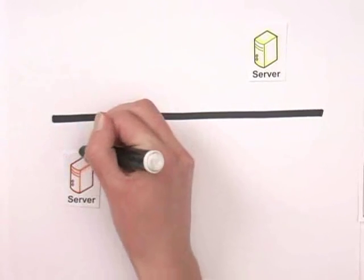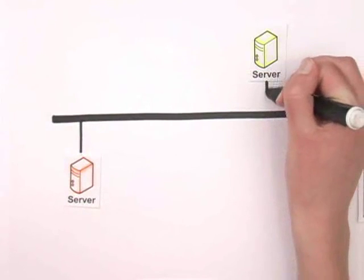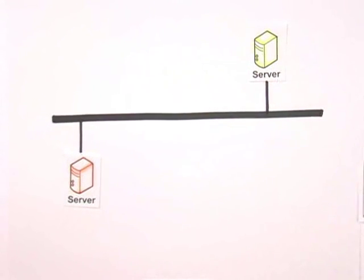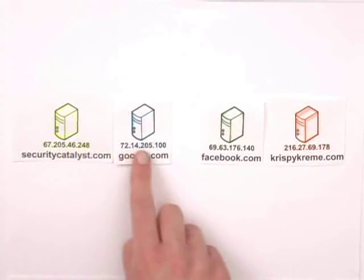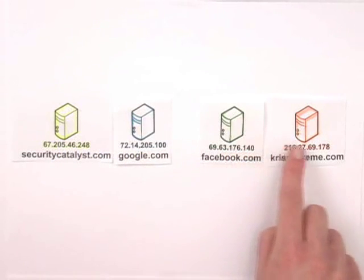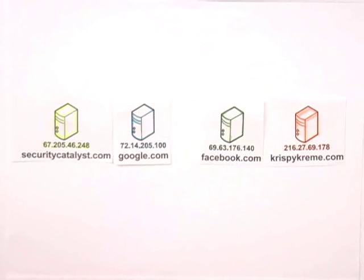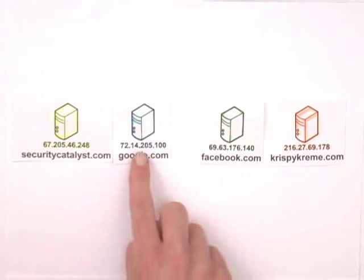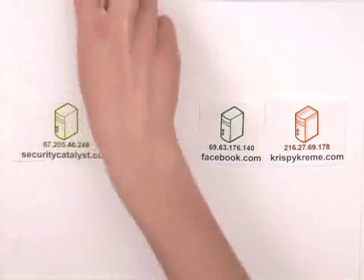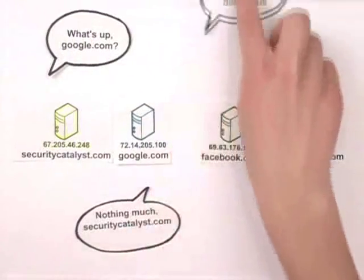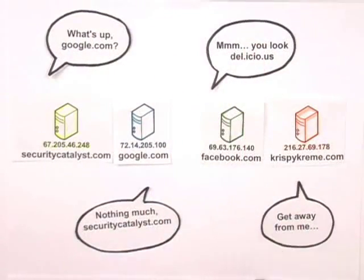The Internet is useful because two computers connected directly to this wire can communicate. A server is a special computer connected directly to the Internet, and web pages are files on that server's hard drive. Every server has a unique Internet Protocol address, or IP address. Just like a postal address, IP addresses help computers find each other. But since 72.14.205.100 doesn't exactly roll off the tongue, we also give them names like Google.com, Facebook.com, or SecurityCatalyst.com.